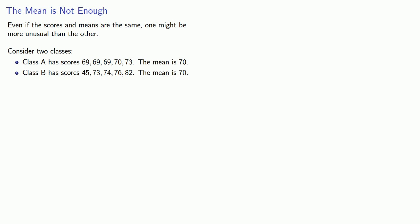Now, the classes have the same mean, and in both classes, there is a student who got a 73. But a 73 in the first class is the highest score in the class. But a 73 in the second class is the second lowest score in the class.